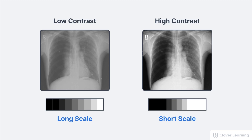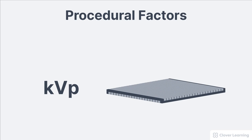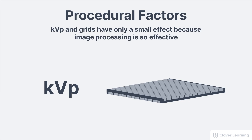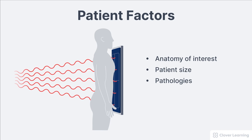So what affects image contrast? Procedural factors like KVP and grids have a small effect in digital radiography. Their importance is less significant than they used to be because image processing is so effective at creating contrast in the image, even when grid selection and KVP selection isn't quite right. Patient factors like the part being imaged, the patient size, and pathologies also have some effect on image contrast.